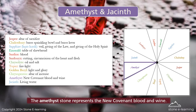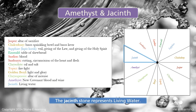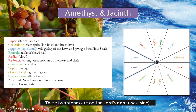The Amethyst Stone represents the New Covenant blood and wine. The Jacinth Stone represents living water. The two stones are on the Lord's right, the west side.